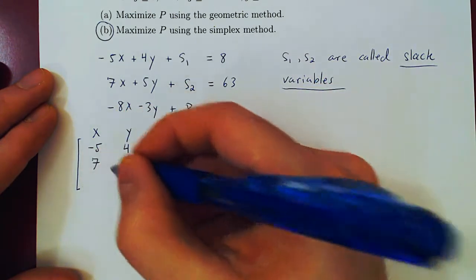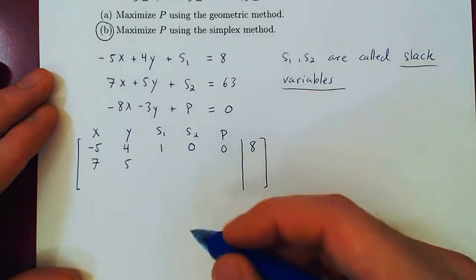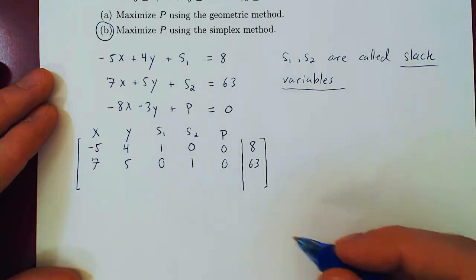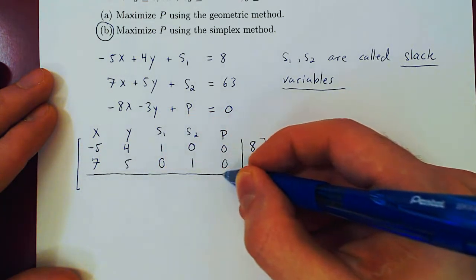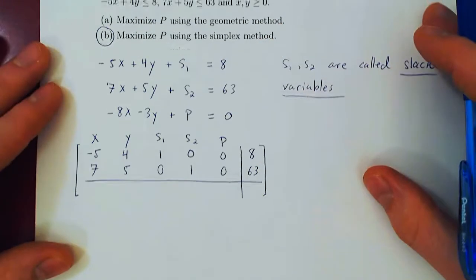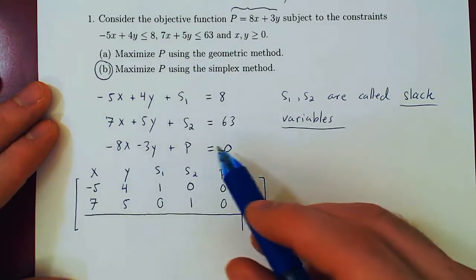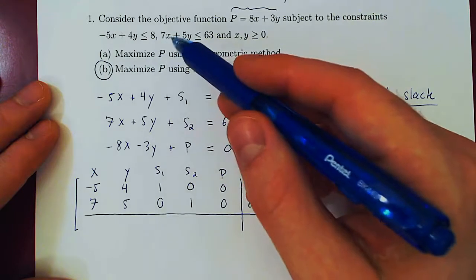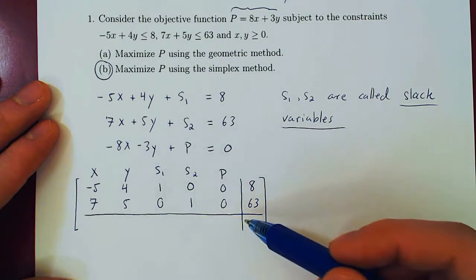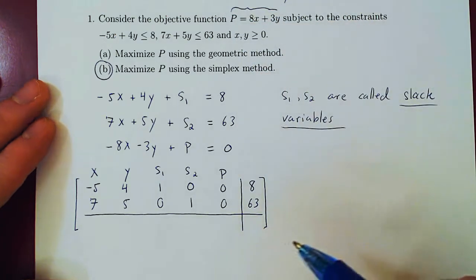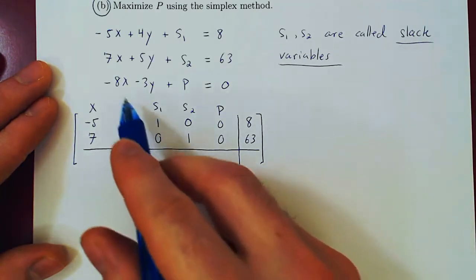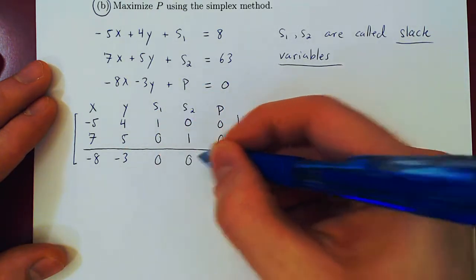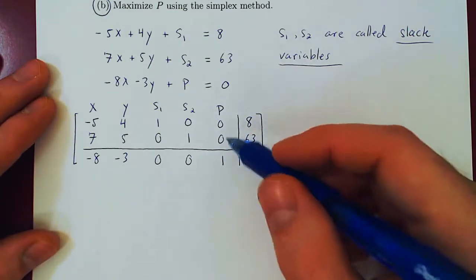Second equation, 7x plus 5y. There is no s1, so zero coefficient, plus 1s2. There is no p, plus 0p, equals 63. And we now use a horizontal bar to separate the equalities coming from the original inequalities and the last equality coming from the objective function. So always remember, what goes on top of your simplex matrix are the equalities constructed from the inequalities by adding up the slack variables. The bottom row will always be obtained by transforming the objective function. Now the equality becomes negative 8x, negative 3y, there is no s1 or s2, so 0s1, 0s2, 1 times p, equals 0. So now we have the so-called initial simplex matrix.